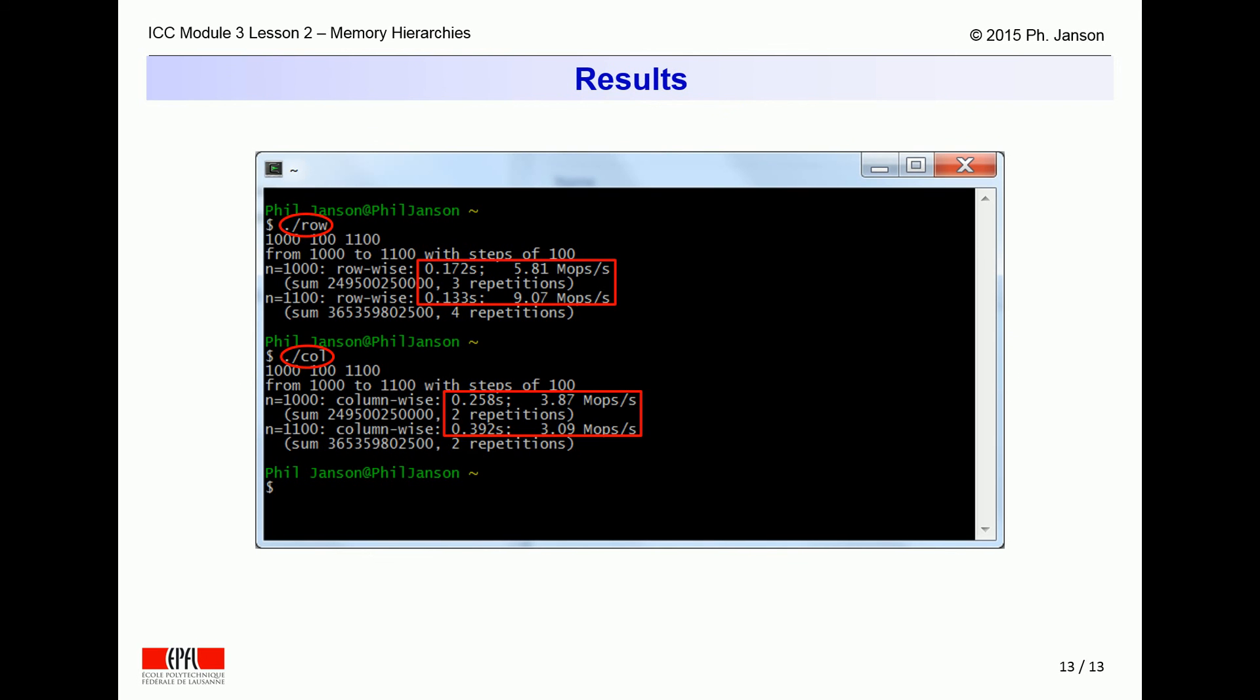These differences are shown on this screenshot from an actual execution of both programs in a row by row memory layout. The top half of the slide shows the performance of the row by row program, whereas the bottom half shows the performance of the column by column program. Both programs add the elements of a thousand by thousand matrix, then in an increment of a hundred, add again the elements of an eleven hundred by eleven hundred matrix.